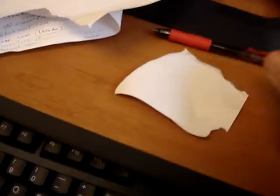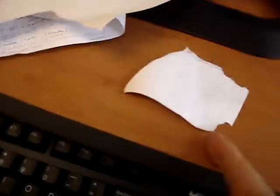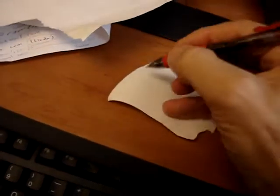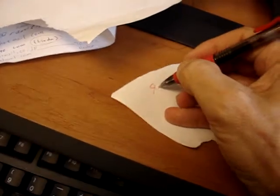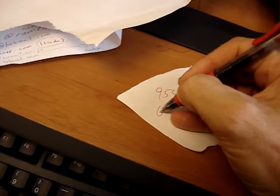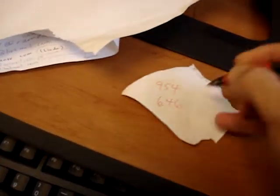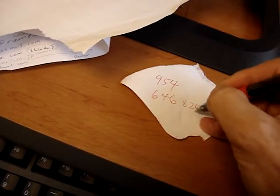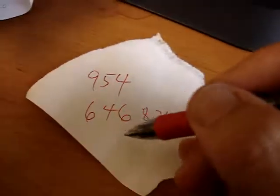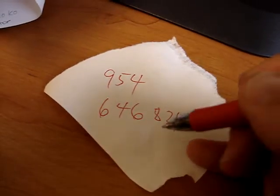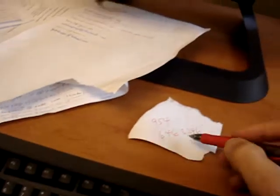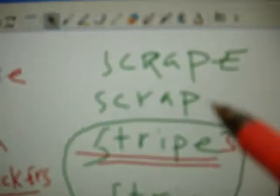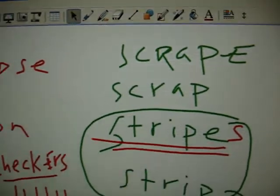Here, I will write my number on a scrap of paper — that's a piece of paper. I write my number here to give to you. There it is: 954-646-8246. That's a scrap of paper.